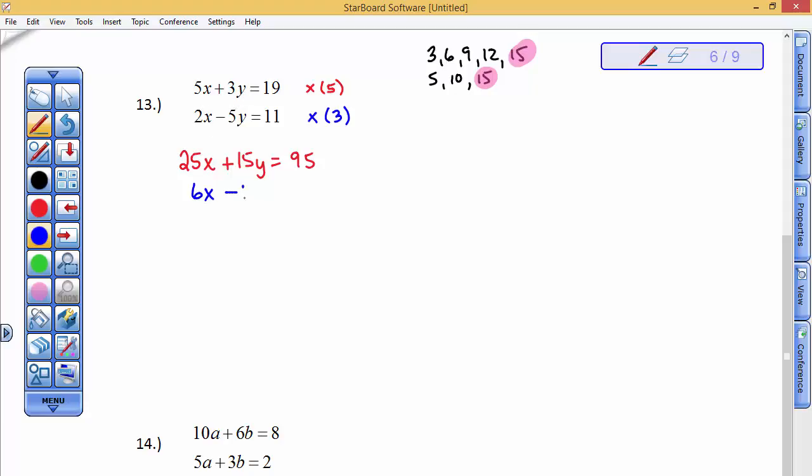And now, I can add these two equations. Well, this adds up to be 31x. The y's are gone. And 95 and 33 adds to be 128. And then, I want to divide both sides by 31. And I get my answer. And I personally don't care to turn that into a mixed number. I just want to leave it. I don't care what it is.